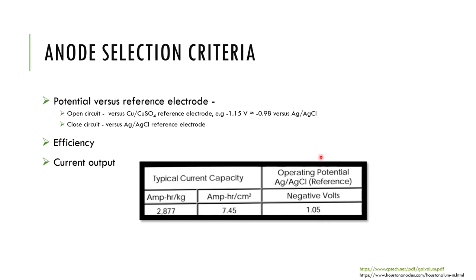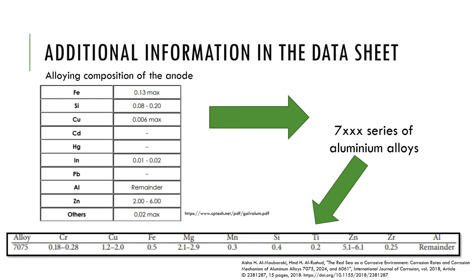The operating potential seen in the catalogs or data sheets refers to this closed circuit potential. The open circuit potential is related to the potential of the anode only. When we look at the other information in the data sheet, it usually consists of the alloying composition of that anode.